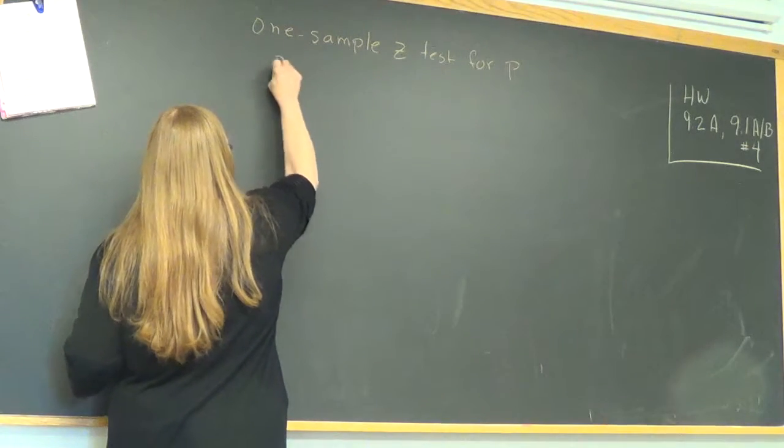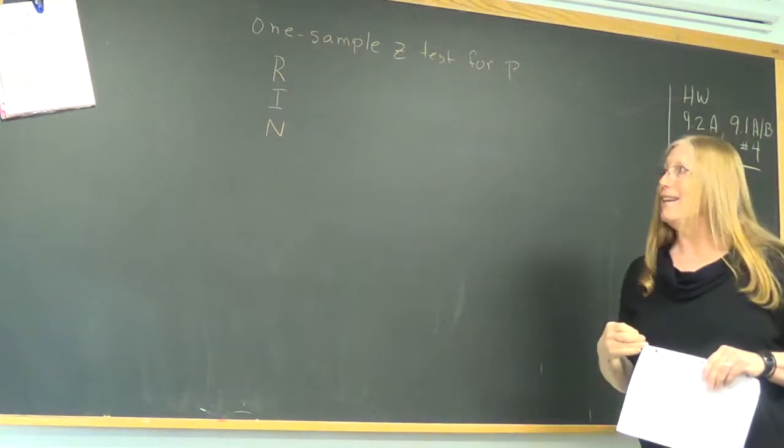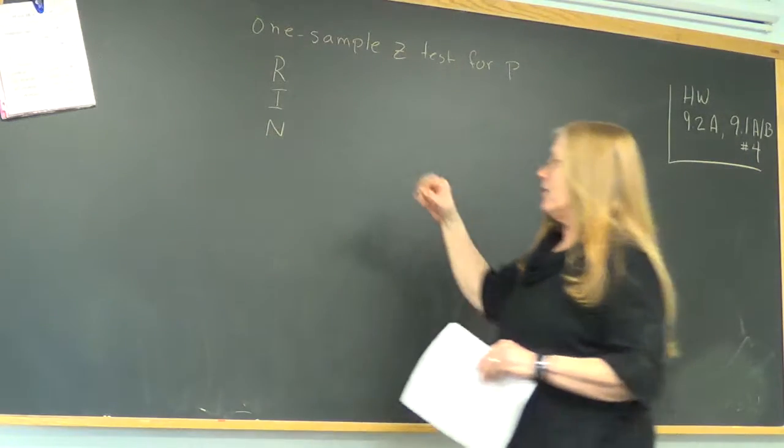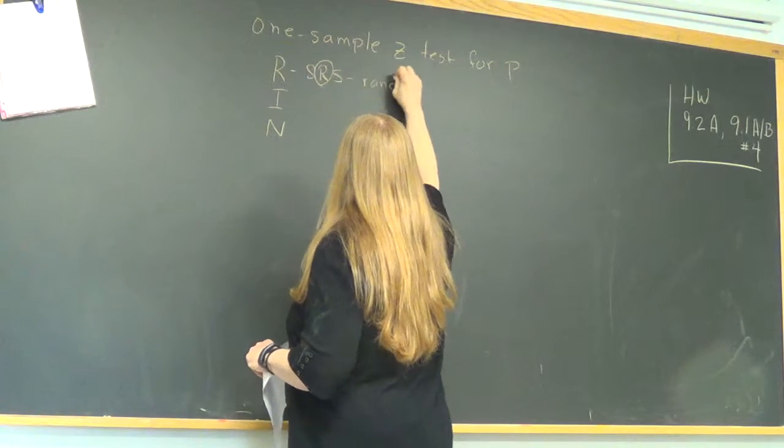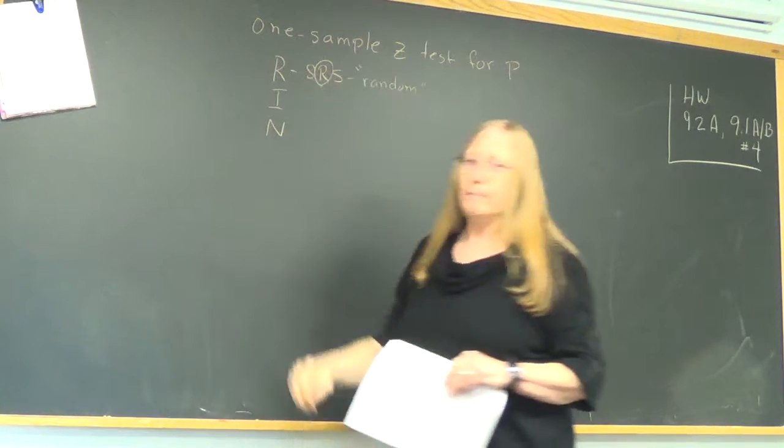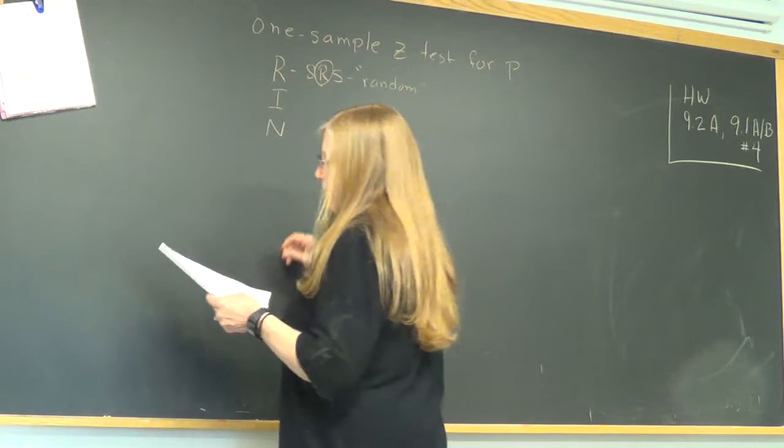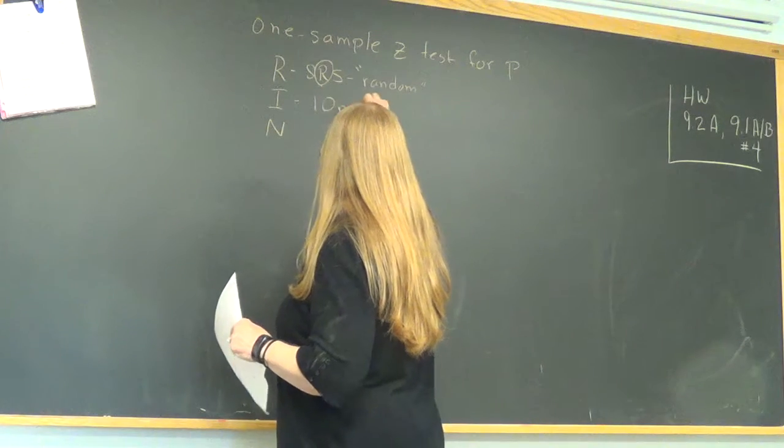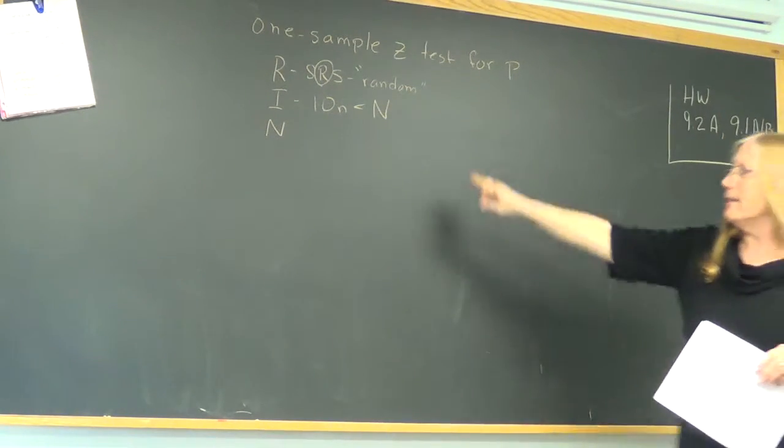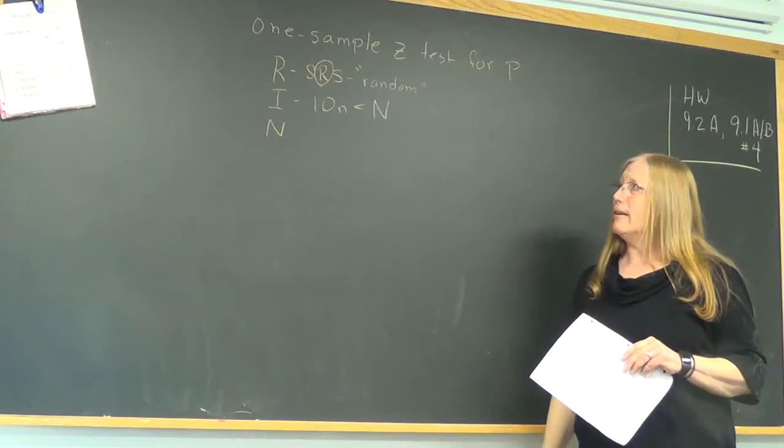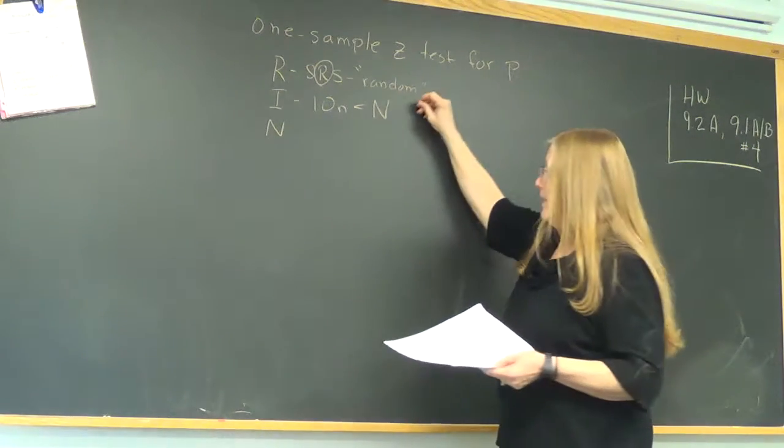First step always is to do a RIN. You cannot do a confidence interval or a t-test without checking for RIN. RIN is usually given as random, like if they say an SRS or if they mention the word random in the problem, then you know it's random. Independent is similar to what you've seen before. You're going to look at the sample size and multiply it by 10.